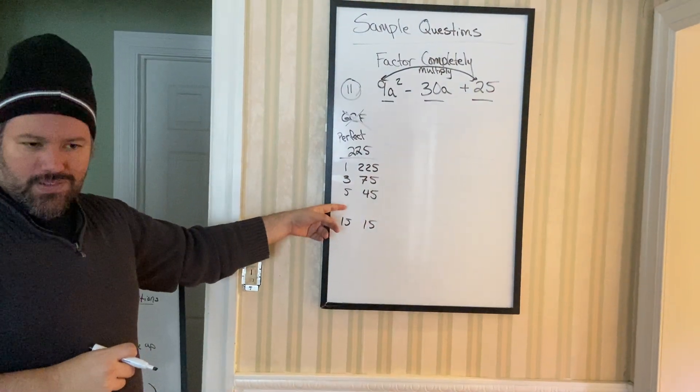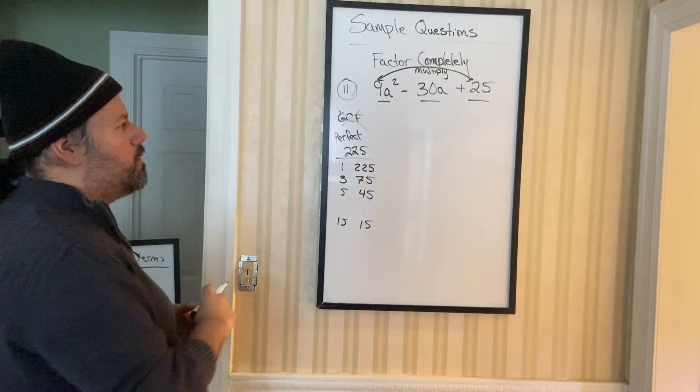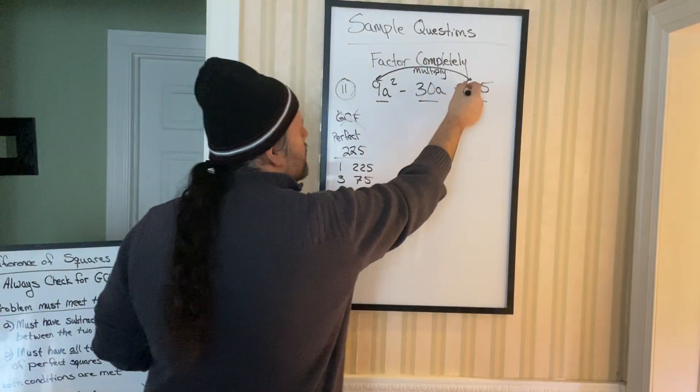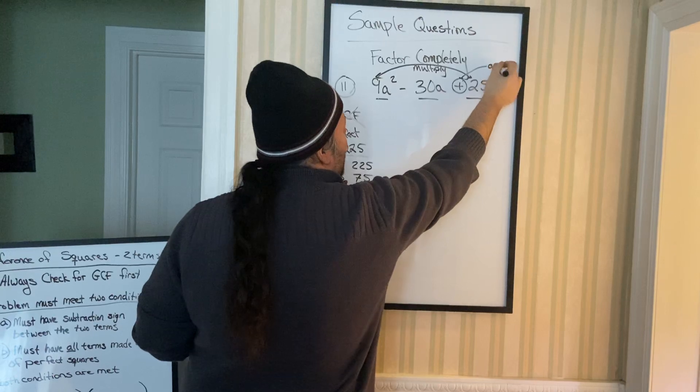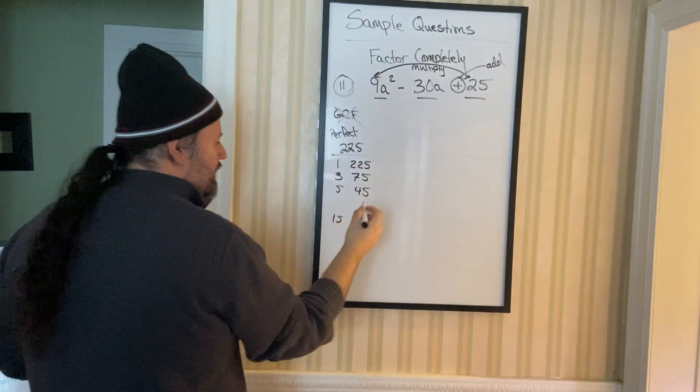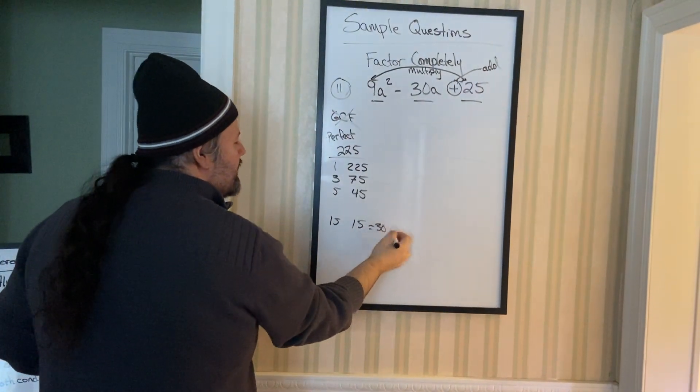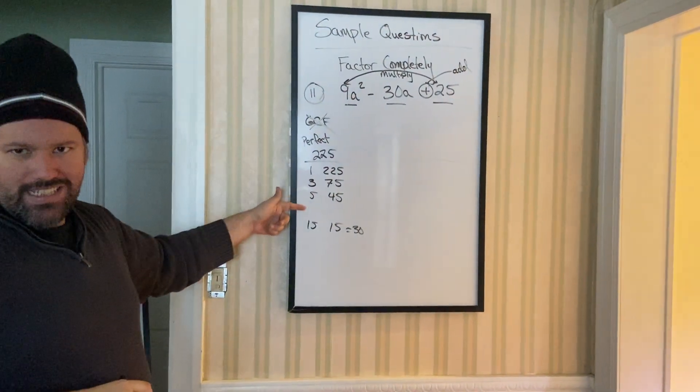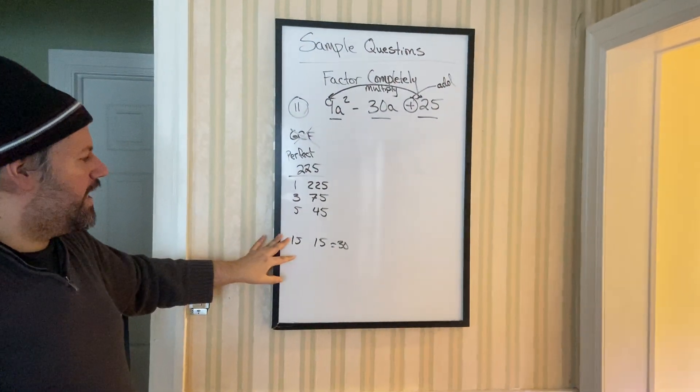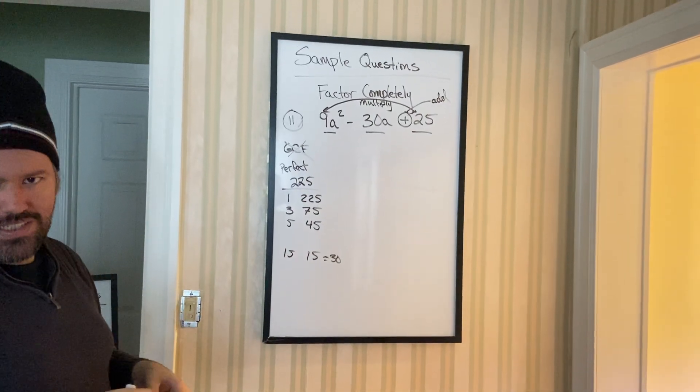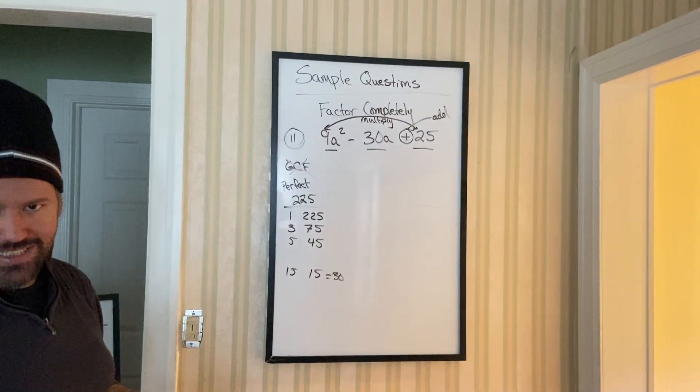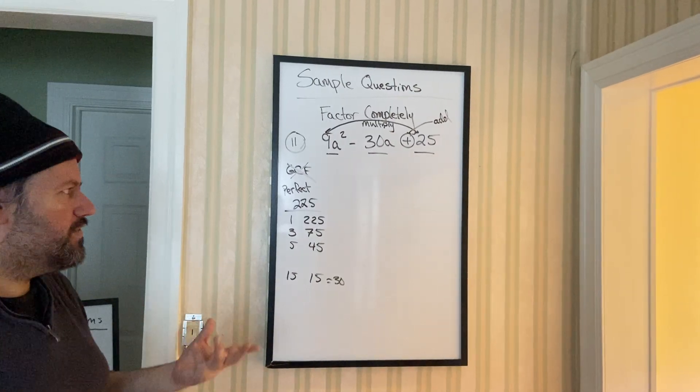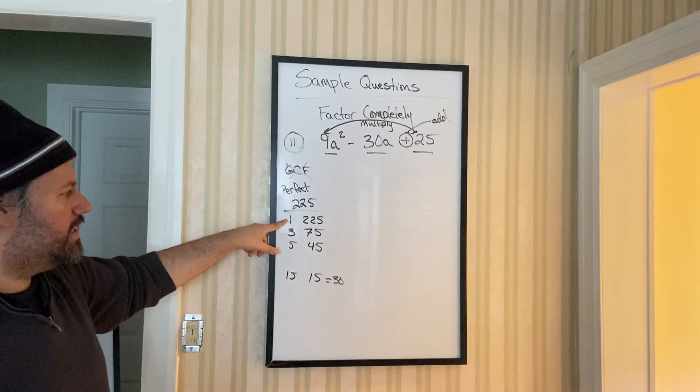Now maybe you didn't get all the combos. But remember, once you find your combos, you knew that you were going to add the list. Notice, this is the combo that gives you 30. So it doesn't matter what these are. As long as you find the combo that works, then you don't have to find all the combos in the list. Maybe that's a little confusing for you.